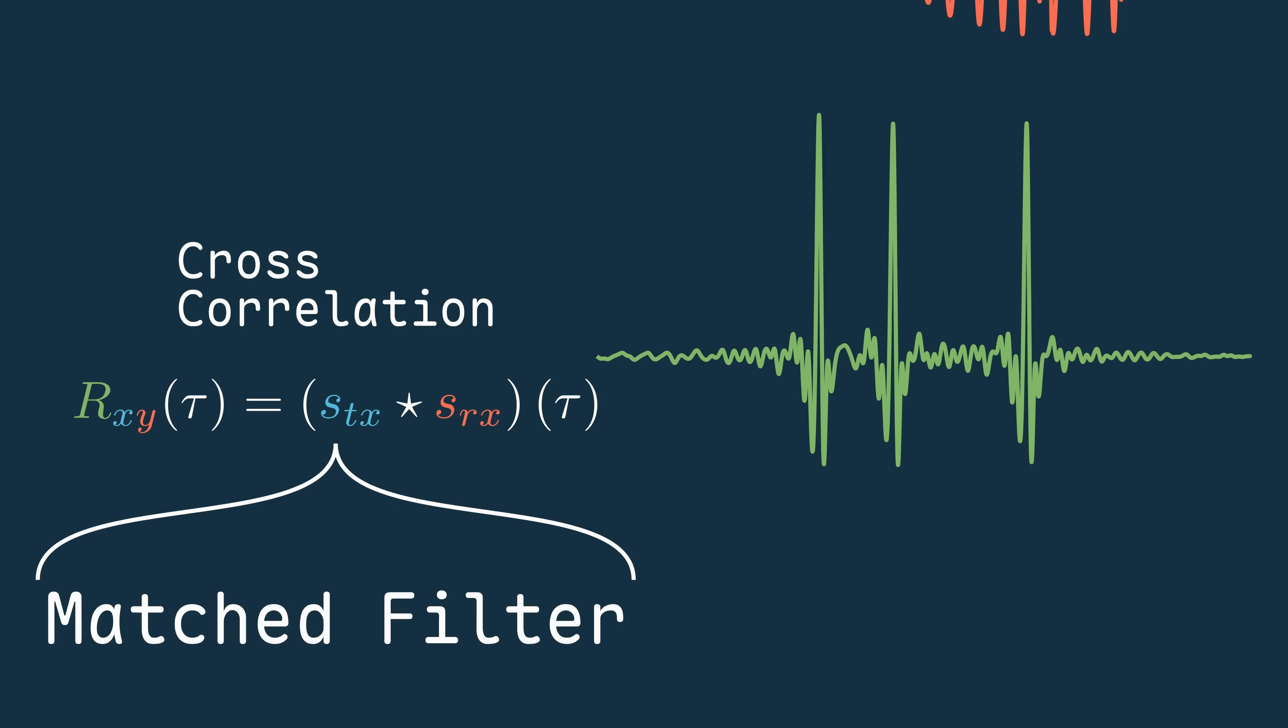A matched filter is a signal processing operation that maximizes the signal-to-noise ratio for a known waveform in the presence of some random noise.